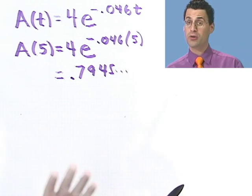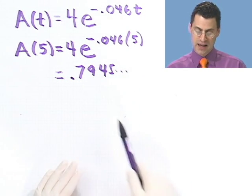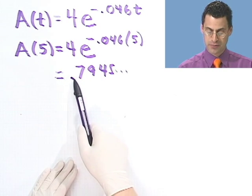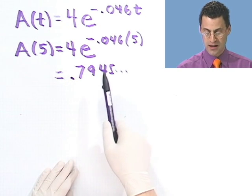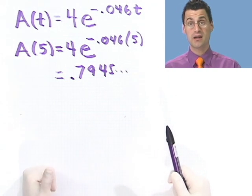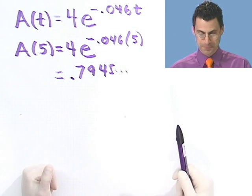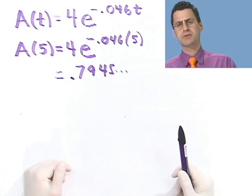So that means that, remember, we started with 4 micrograms at the beginning. And now we're down, after 5 hours, to 0.7945 micrograms. So you can see it's leaving the body reasonably quickly. Now, another question we could ask is: what is the half-life of this radioactive substance?